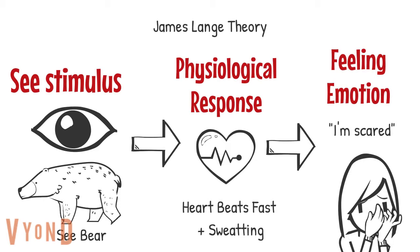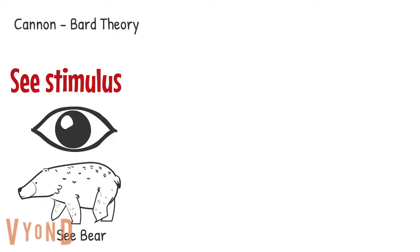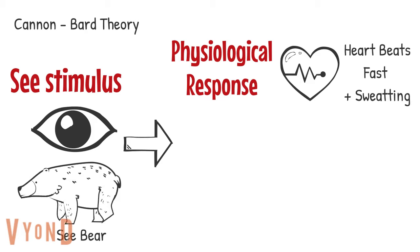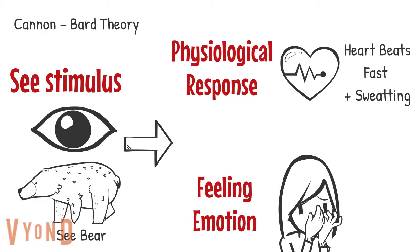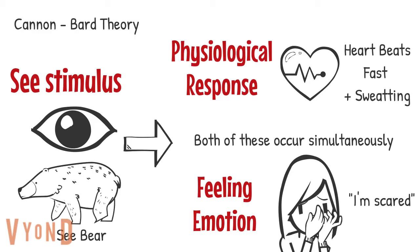The Cannon-Bard theory argues that you first see or notice the stimulus — in your case, that would be seeing a bear at your campsite. Then you experience the physiological response, such as sweating and your heart beating rapidly. At the same exact time, you also experience the emotion, which in your case at the campsite would be feeling fear. So the Cannon-Bard theory argues that you experience the physiological response and the emotion at the same time.